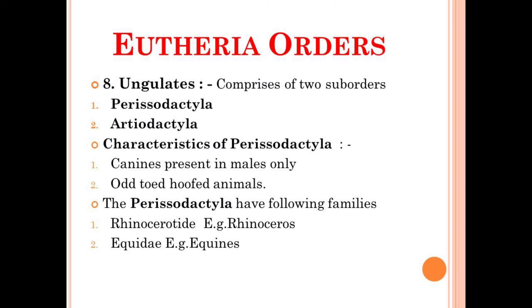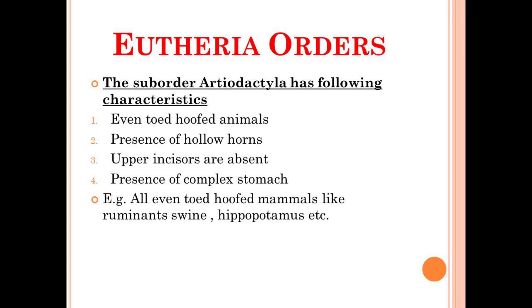The next order is the Ungulata, which consists of two sub-orders: the first one is Perissodactyla and another one is Artiodactyla. Talking about the characteristics of Perissodactyla, they have canines only in the case of males and have odd-toed hoofs. The sub-order Perissodactyla has different families like Rhinocerotidae — for example, rhinoceros — and Equidae — for example, equines.